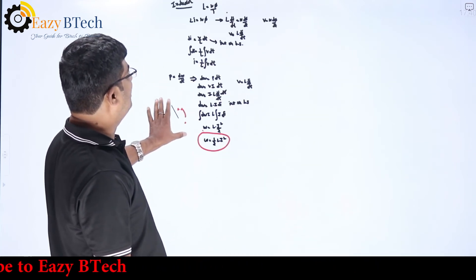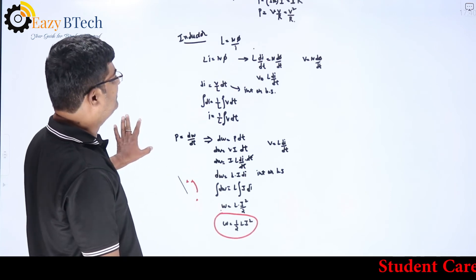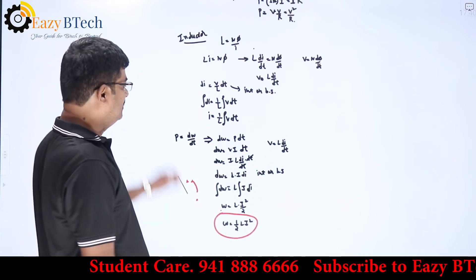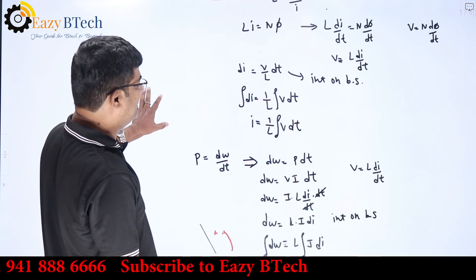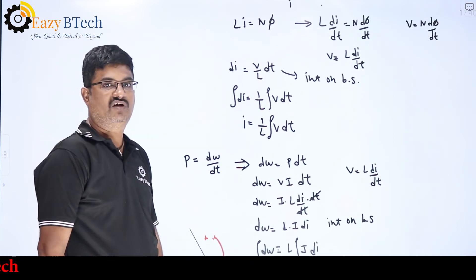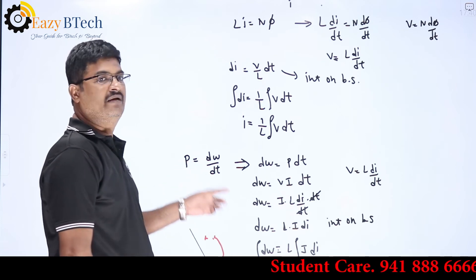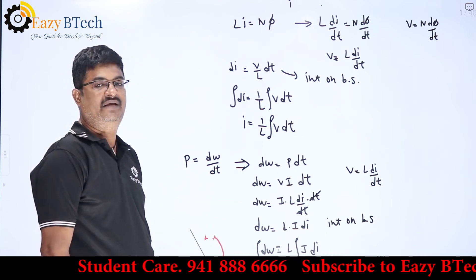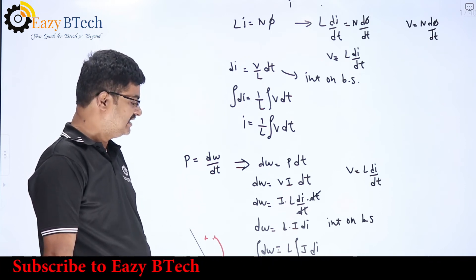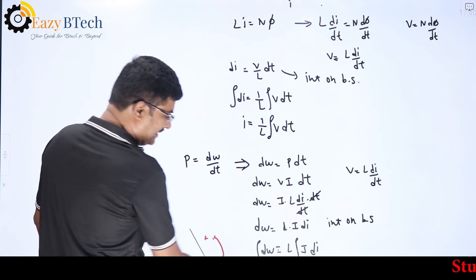To summarize the inductor: from the definition of inductance, L = Nφ/i, we derived the current equation i = (1/L)·∫v dt. Power is defined as the rate of doing work, p = dw/dt, and we derived the stored energy. Now we move on to the capacitor.